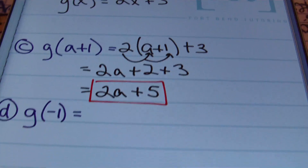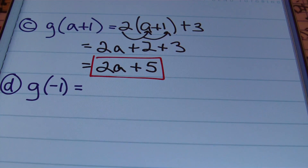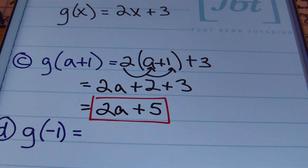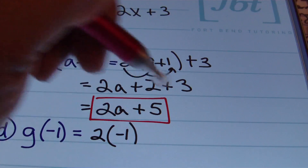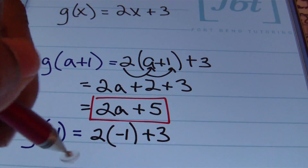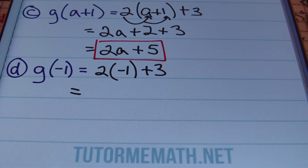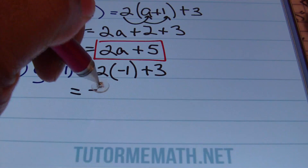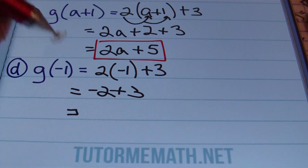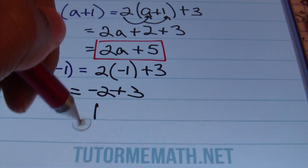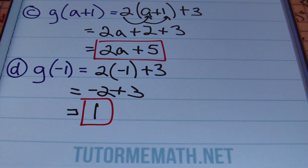From there, we have g of negative 1. That means we'll use the g function again, but this time replacing all the x's with negative 1. It's going to look like the following: 2 times negative 1 plus 3. Simplifying, multiplication goes before addition: 2 times negative 1 is negative 2, plus 3. Negative 2 plus 3 gives me a positive 1. So g of negative 1 equals 1.